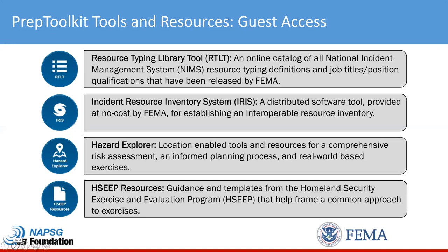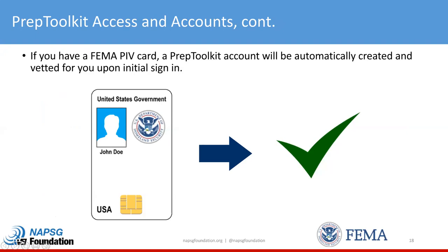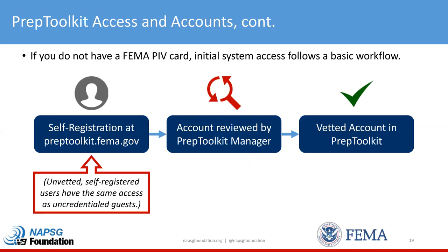If I want access to additional tools, I'll need to create an account. If I have a FEMA PIV card, getting a Prep Toolkit user account is really simple — all I have to do is access Prep Toolkit using my PIV card and a user account will be automatically created and vetted for me. If I don't have a FEMA PIV card, gaining a vetted user account follows a basic workflow: I first self-register for a user account following the online prompts. After this I will have a user account but still have the same access as a guest, until the account is reviewed by managers of Prep Toolkit and, if approved, I will then have a vetted user account with access to additional tools and features.